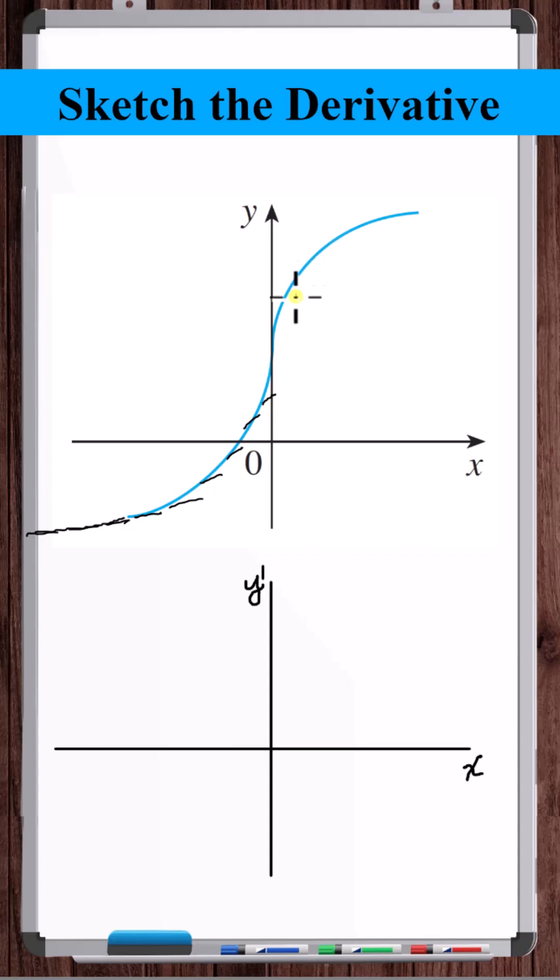On the right side of the graph, the slope is also always positive. And it looks like as x goes to infinity, the slope is approaching zero. So we've also got a horizontal asymptote at y is equal to zero.